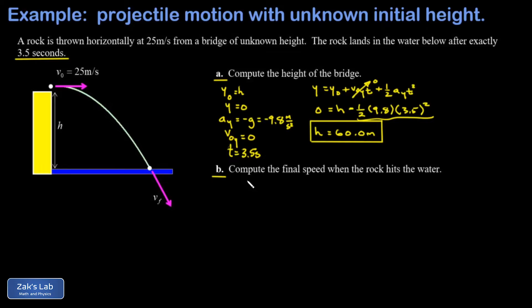In part B, I want the final speed when the rock hits the water. And the X component of this final velocity, that's the easy part. In projectile motion, the X velocity never changes. So when it impacts the water, that rightward component is still 25 meters per second.